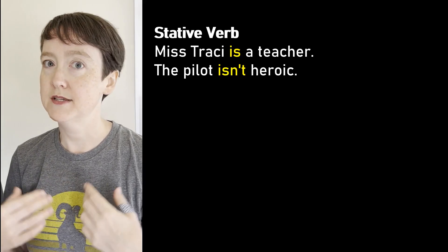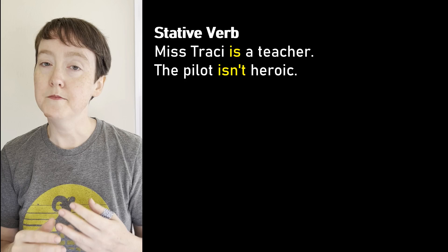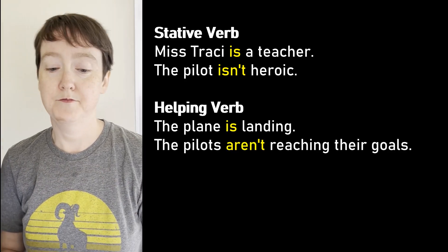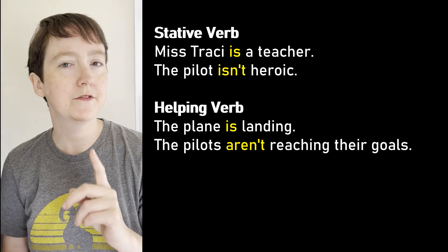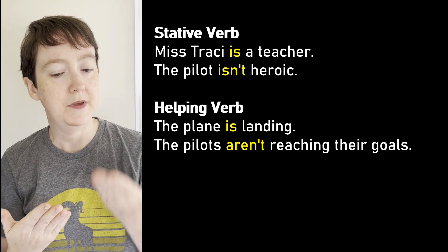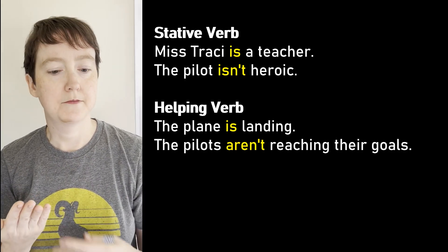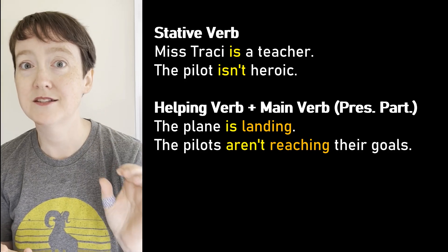Another special verb like this is be. Be can be a stative verb: 'Miss Tracy is a teacher,' 'The pilot isn't heroic.' Or be can be a helping verb: 'The plane is landing,' 'The pilots aren't reaching their goals.' But notice how this helping verb is different. With do, we use a main verb in base form — no special ending. With be, we use a main verb in present participle form, with an -ing ending.